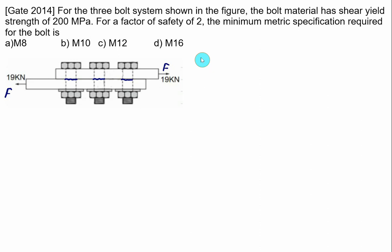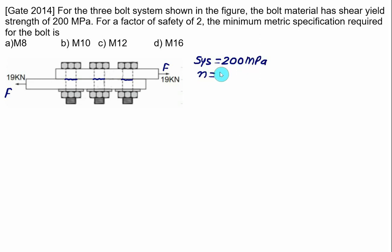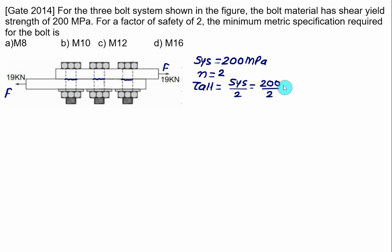The shear yield strength SYS = 200 MPa and factor of safety N = 2. So the allowable shear stress tau allowable = SYS / 2 = 200 / 2 = 100 MPa.